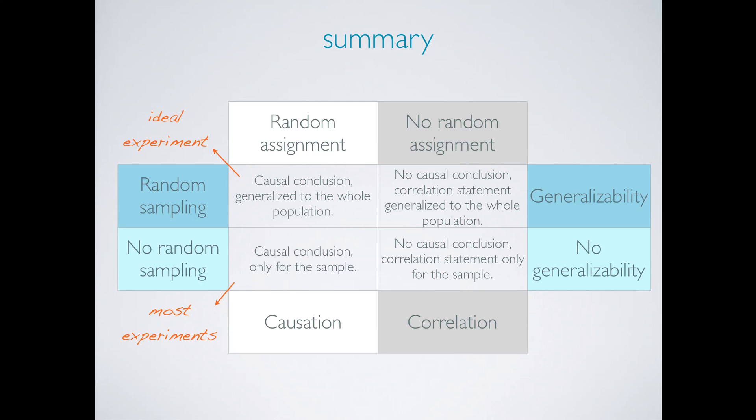A study that uses no random assignment but does use random sampling is your typical observational study. Results can only be used to make correlation statements but they can be generalized to the whole population.